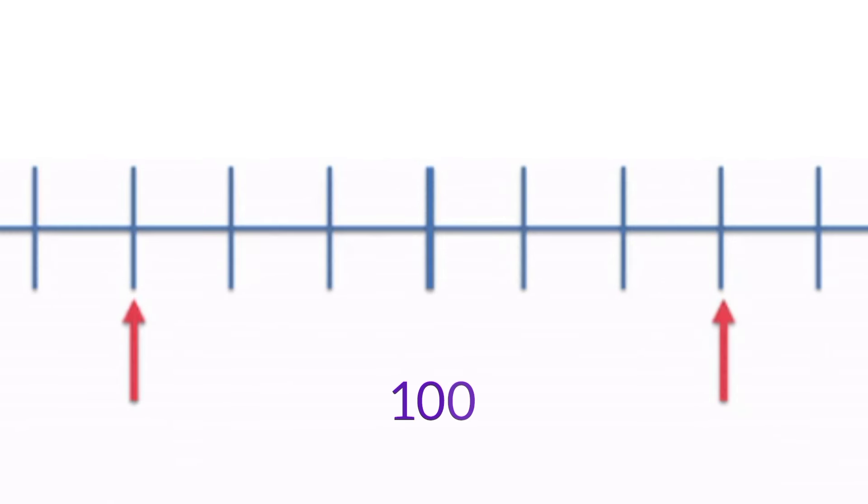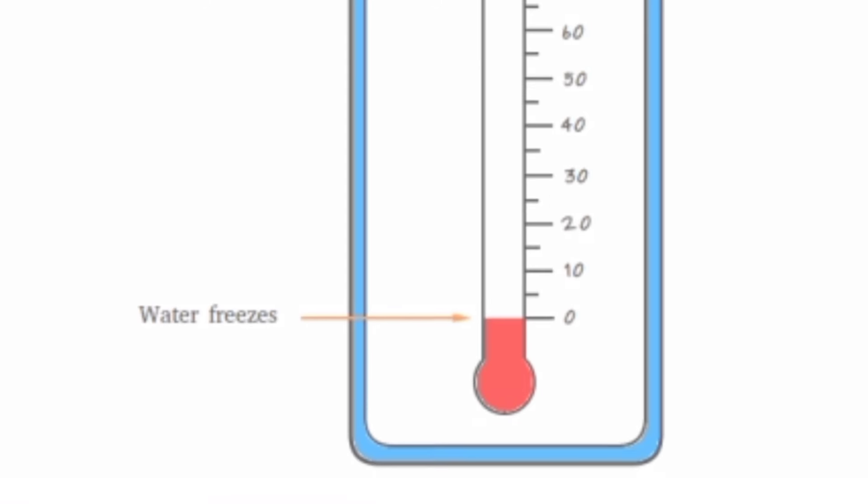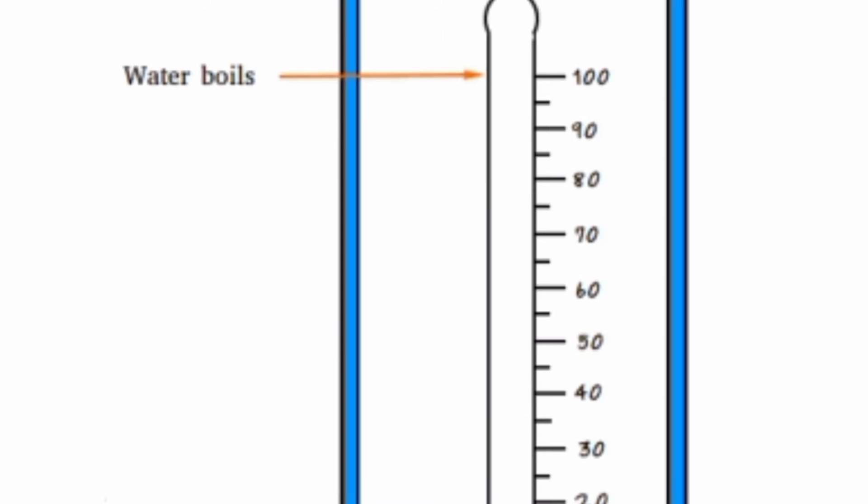These points are divided into 100 parts and each part is defined as 1 degree Celsius. The freezing point is taken as 0 while the boiling point is taken as 100 degree Celsius.